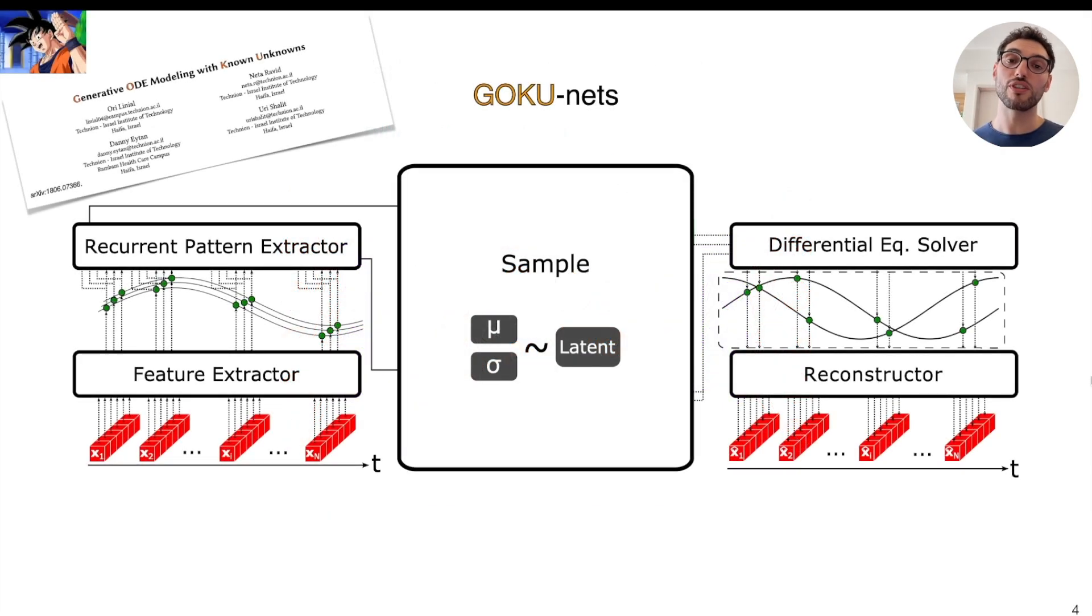Specifically, we focus on a model called GokuNets. As in any autoencoder, here the goal is that the output reconstructs the input as close as possible. In this context, the inputs are high dimensional time series. Initially, each time frame is processed independently, usually reducing the dimensionality.